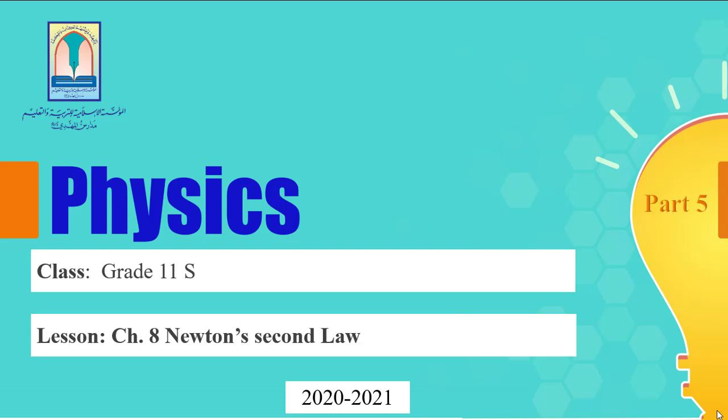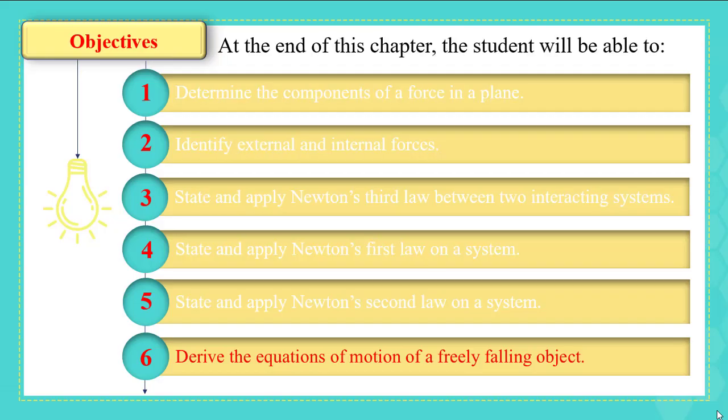This is the fifth part of this chapter on Newton's second law and applications. At the end of this part, you're going to be able to derive the equations of motion of a freely falling object, and mainly the vertical launching.